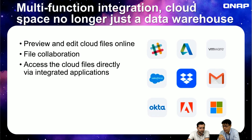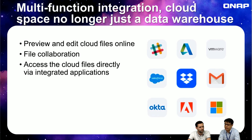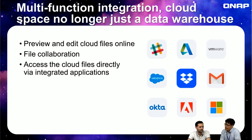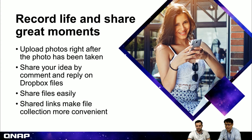The final benefit is accessing cloud files directly through integrated applications. For example, in Gmail, if you want to send an attachment, there's a size limit of around 25-30 megabytes. But with Dropbox, you can select the file from the Dropbox icon in Gmail, and it will attach a file link instead. There's no size limitation for your attachment. The receiver gets your email and downloads the file from Dropbox, so it won't take up their mail space either.